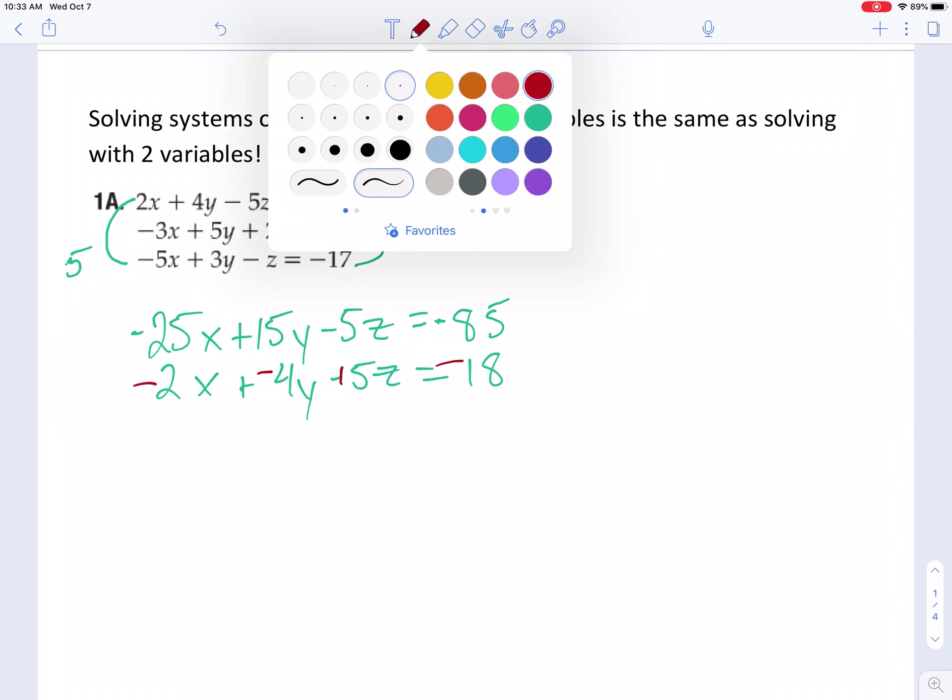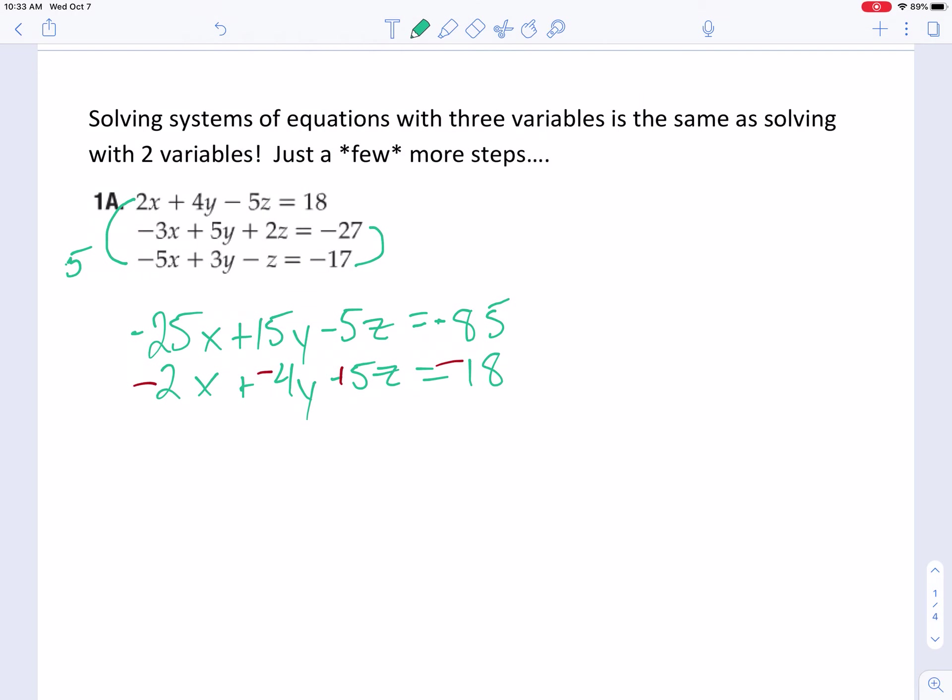Probably I need to subtract the bottom one. So I'm just going to do that switching of the signs. I call that my super secret ninja move, not very secret if I tell you about it, but I'm left with negative 27x plus 11y, and my z's cancel, and I have negative 85 minus 18, which is negative 103.